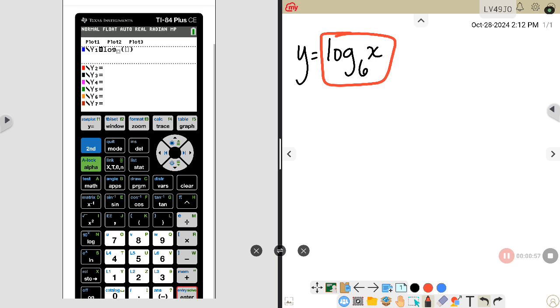So I'll have log, I'll put a 6 in the base and then come over here and put the x in, and then graph it. So here is what a logarithmic function looks like on a graph.